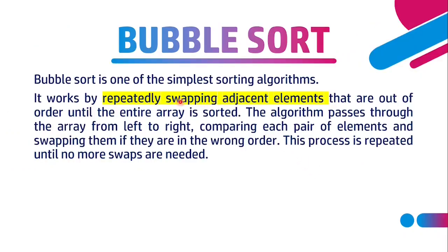Bubble sort is one of the simplest sorting algorithms. It works by repeatedly swapping the adjacent elements that are out of order until the entire array is sorted. This is a very important line — repeatedly swapping adjacent elements is the core working of bubble sort. Whenever we have elements out of order, swapping is performed.